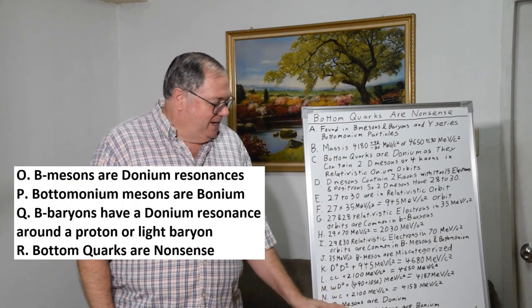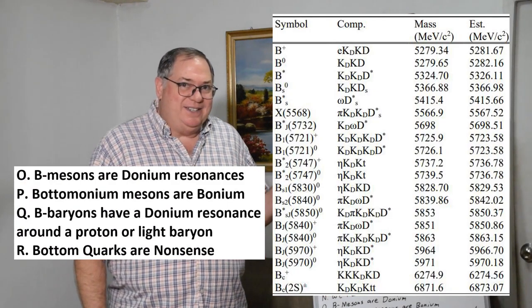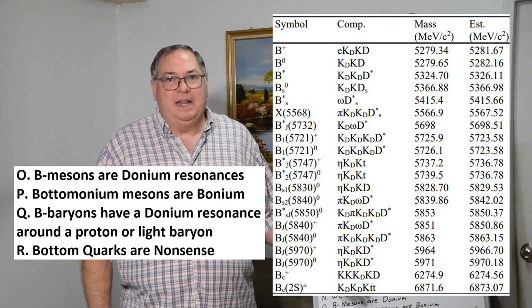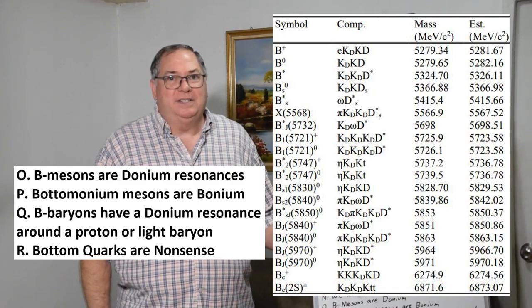When I was doing my papers on this, B mesons are donium, and here's a chart showing different models where I've estimated the mass generally to 0.1% relative accuracy.